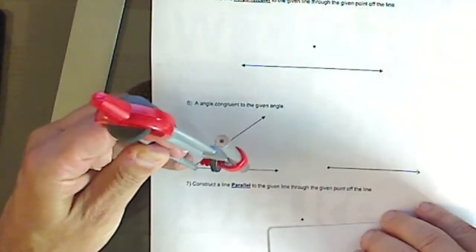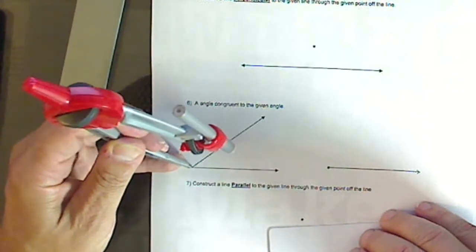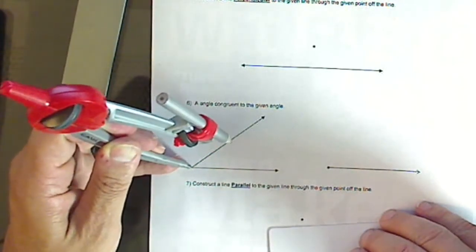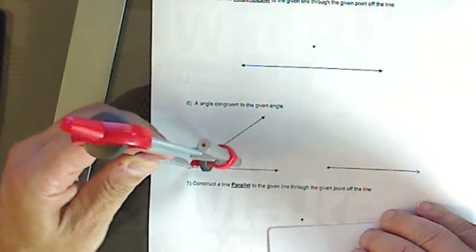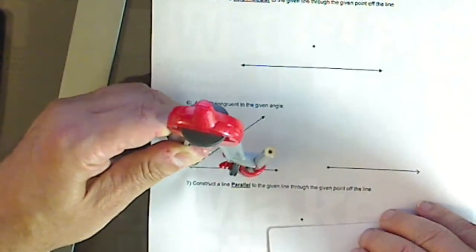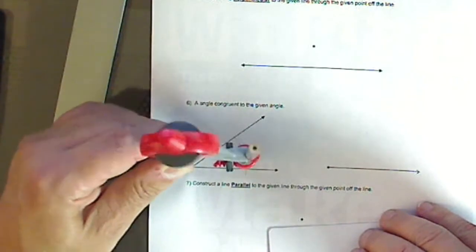So what I do is I put this on the point. And yes, this is how we start angle bisectors, but be careful, that's not what you're doing. Don't let your mind drift. And we draw an arc.